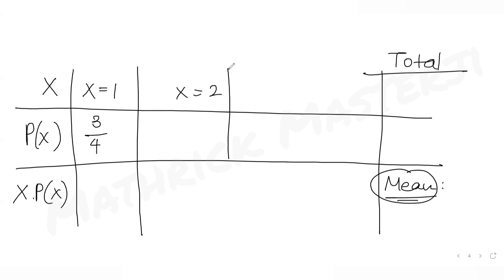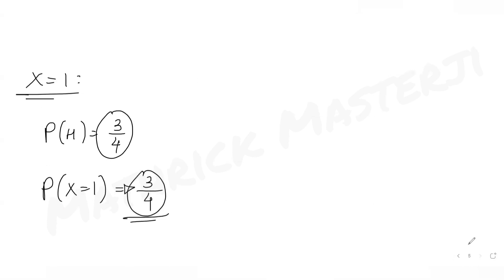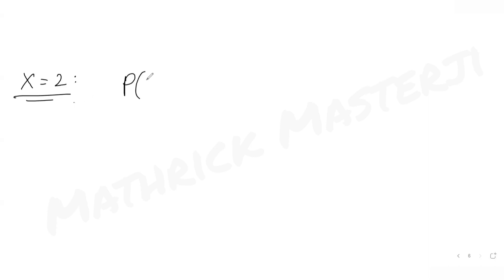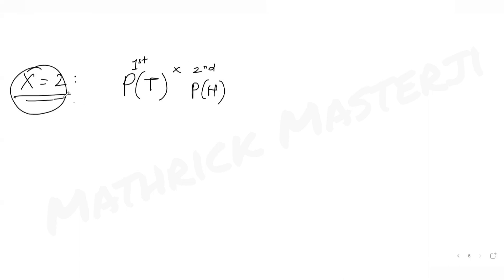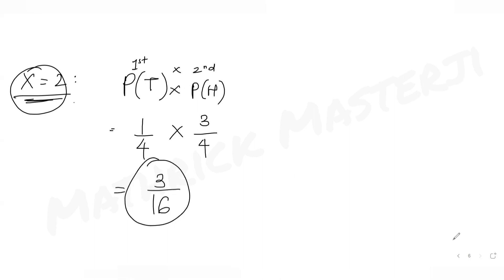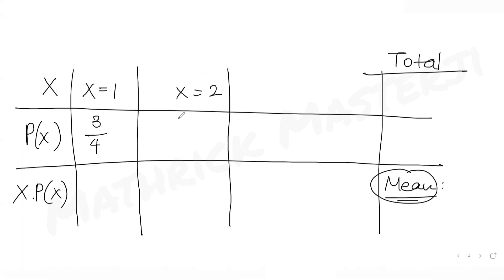For X equals 2, two tosses are required and then you stop. This means you did not get a head on the first toss, so you got a tail. Then on the second toss you get a head and stop. Probability of getting tails is 1 over 4, and probability of getting a head on the second toss is 3 over 4, giving probability at X equals 2 as 3 over 16.